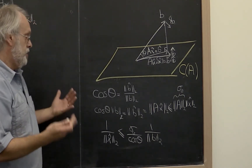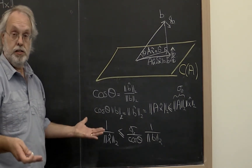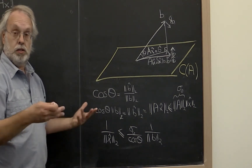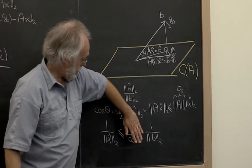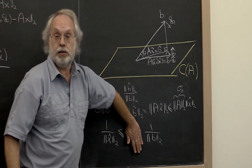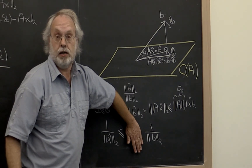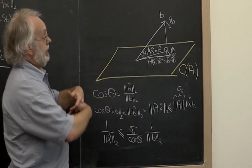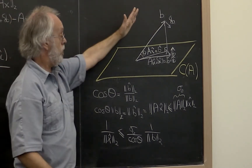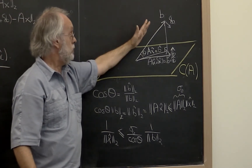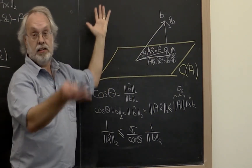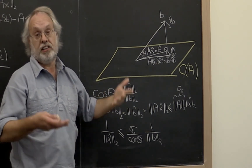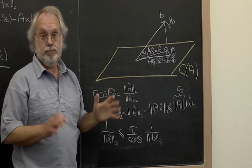When we just looked at solving a linear system where we know there was a solution, that cosine did not come into play. Why? Because the column space of A is the entire space, and therefore the angle between any vector b and the entire space is clearly zero — because that vector is in that space.